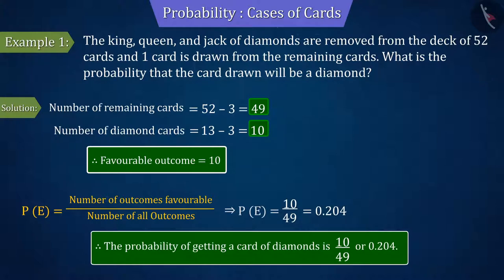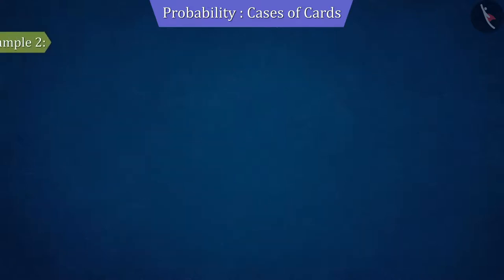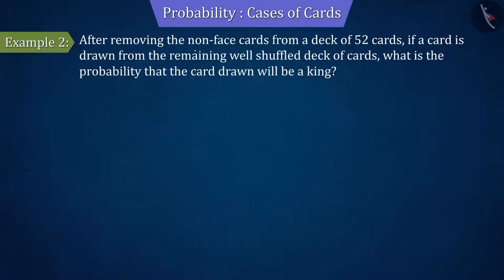Let's discuss another example. After removing the non-face cards from a deck of 52 cards, if a card is drawn from the remaining well-shuffled deck of cards, what is the probability that the card drawn will be a king?